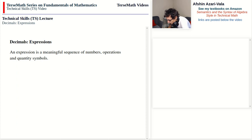Examples of meaningful sequences of numbers, operations, and quantity symbols include 4.3 plus 5.2. As you can see, there are numbers, there is an operation — addition — and this one doesn't have any quantity symbols, and it's meaningful. We know what we need to do. When we say meaningful, it means that we can work out what's written and arrive at a number, at an answer.